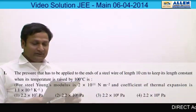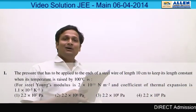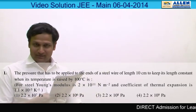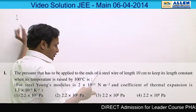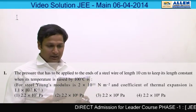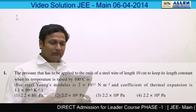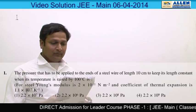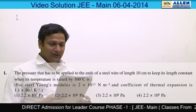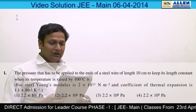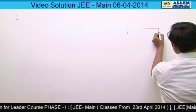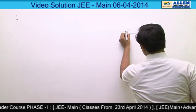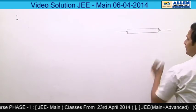Question number one. The basic philosophy behind this question is thermal stress, thermal strain, and pressure. The question is: what pressure has to be applied to the ends of a steel wire of length 10 cm to keep its length constant when its temperature is raised by 100 degrees centigrade? We have a steel wire and we need to apply a pressure, as a result a thermal strain will be developed in this wire.